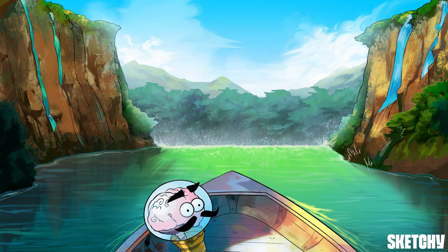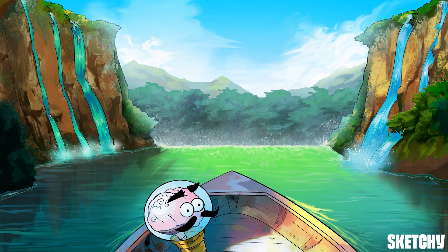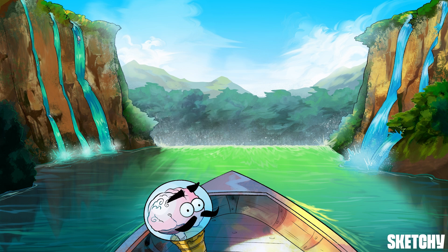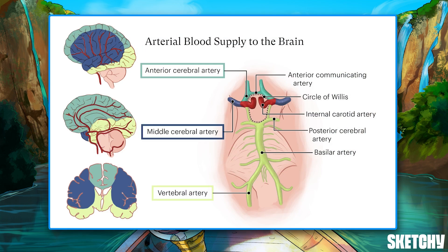Just like these shimmering waterfalls feed into the main river, the ACA enjoys collateral flow from the anterior communicating artery. If we go back to our image, you can see how this backup flow connects the left and right anterior cerebral arteries and can help support the distal ACA territory if the vessel becomes compromised. However, if an aneurysm ruptures right in the anterior communicating artery, it can lead to a bilateral ACA territory infarction.